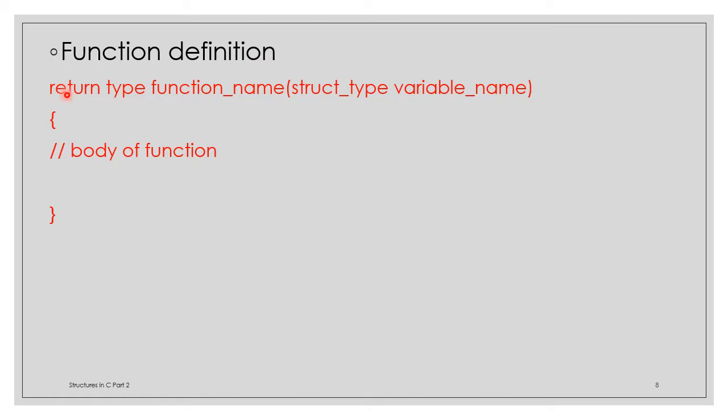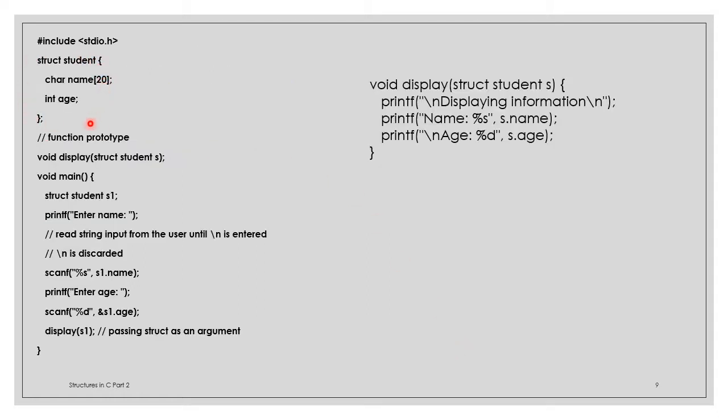Function definition: return type, function name, struct variable name should be specified. Function can receive structure variable name or array name. Example: struct student is defined, then display function is defined as void display(struct student s). Function call statement: display(s1), where s1 is a structure variable of struct student type. Calling the function with display(s1). Thank you.